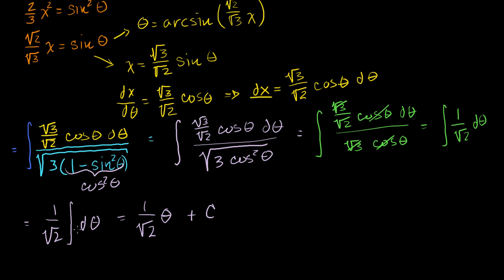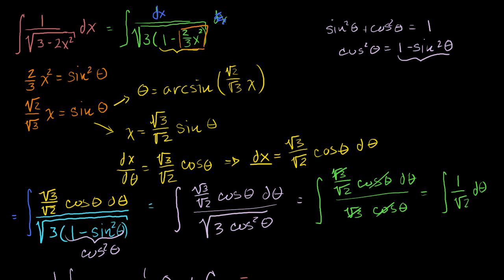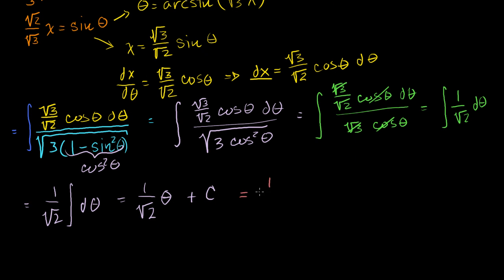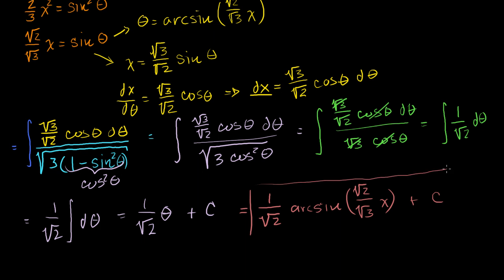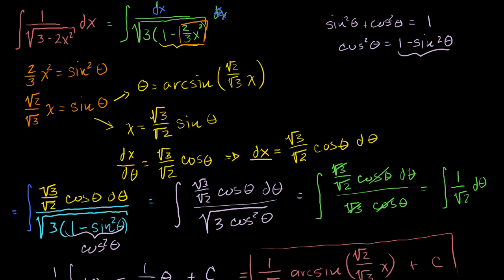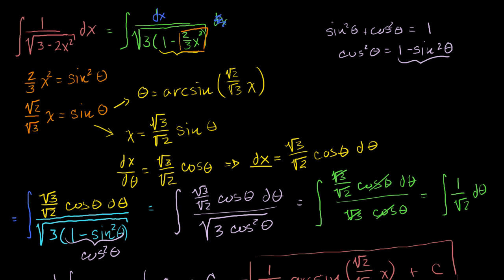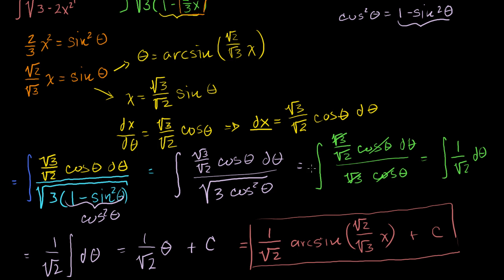But we're not done — we want our answer in terms of x, so we need to reverse substitute. Theta is equal to arc sine of square root of 2 over square root of 3 times x. So our original indefinite integral equals 1 over the square root of 2 times arc sine of square root of 2 over square root of 3 times x, plus C. This is the antiderivative of 1 over the square root of 3 minus 2x squared. Hopefully you found that helpful — I'll do a couple more videos with more examples.